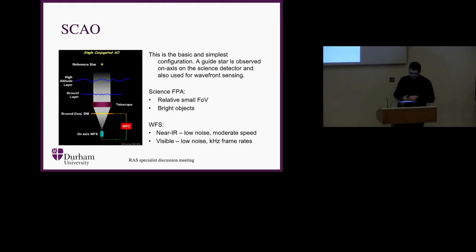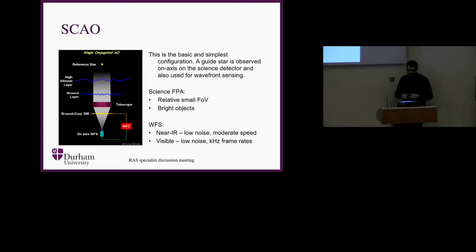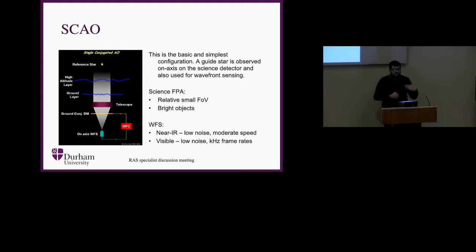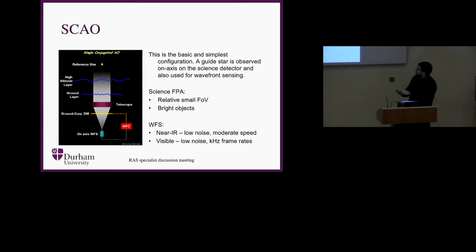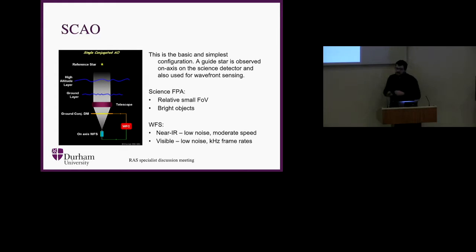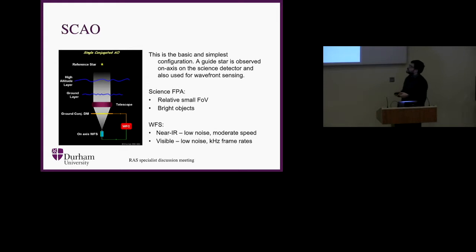Starting with the simplest: single conjugate adaptive optics (SCAO). This was the first star of adaptive optics put onto large telescopes. You observe a star on axis and use that to correct the distortions in the wavefront with a wavefront sensor. In terms of the science focal plane array, we have a relatively small field of view — these are largely for single object observations, so we don't need a large field of view or a large number of pixels. They are relatively bright objects.